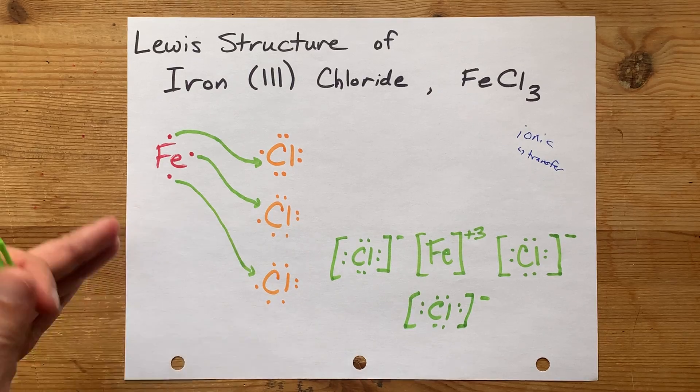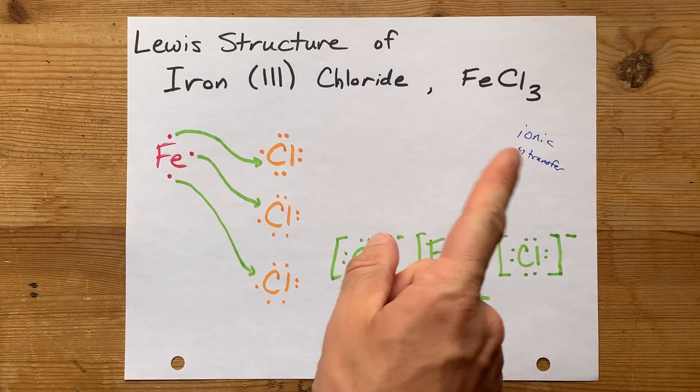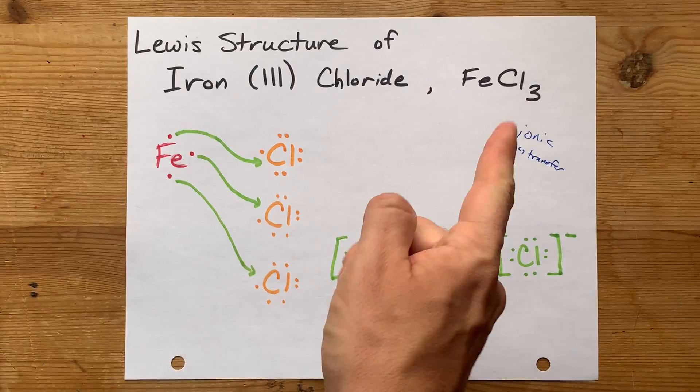There you go. That's your complete Lewis structure for iron 3 chloride. You did it. I knew you could. Best of luck.